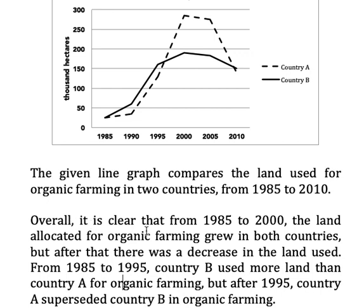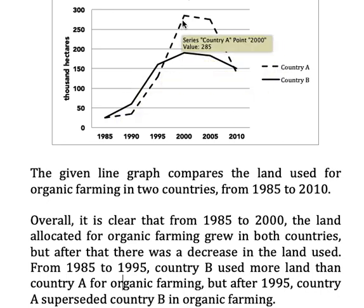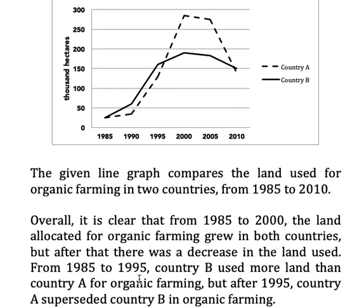Overall, it is clear that from 1985 to 2000, the land allocated for organic farming grew in both countries, but after that there was a decrease in the land used. From 1985 to 1995, country B used more land than country A for organic farming. But after 1995, country A superseded country B in organic farming.